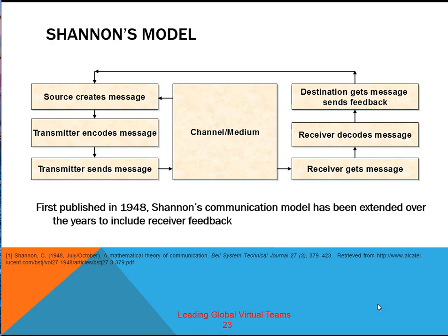The process for communication by these five parts is shown on this slide. First, the source creates a message. The transmitter encodes that message. The transmitter sends the message by connecting it to a channel and a medium. The channel and the medium relay the message to a receiver who gets the message, decodes the message, and then the destination gets the message and understands or perceives it and sends feedback.